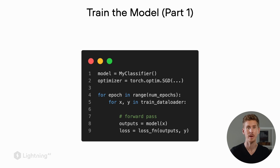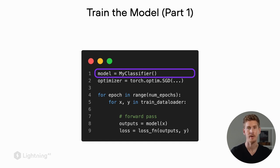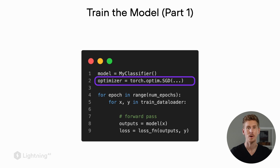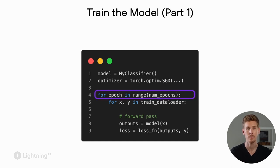To introduce the remainder of the training API, let's suppose we implemented logistic regression in the MyClassifier class. We would initialize our classifier as the model, and then we would also initialize an optimizer. Here we are using stochastic gradient descent, so we call torch.optim.SGD to initialize our stochastic gradient descent optimizer.